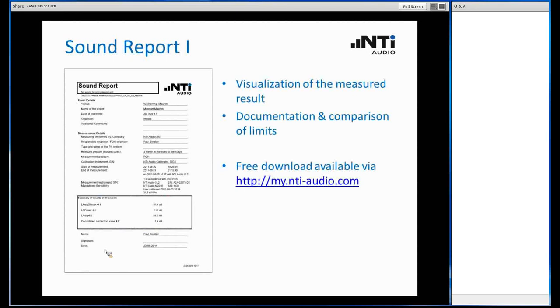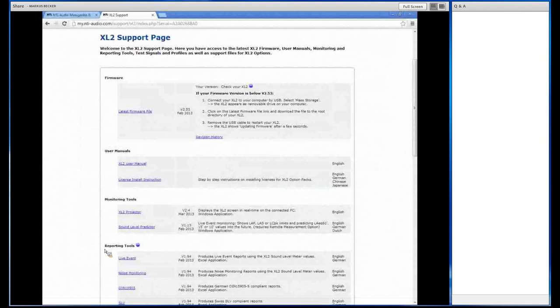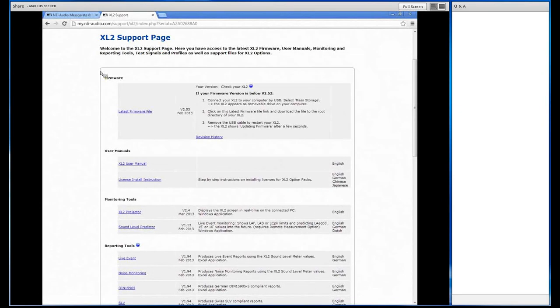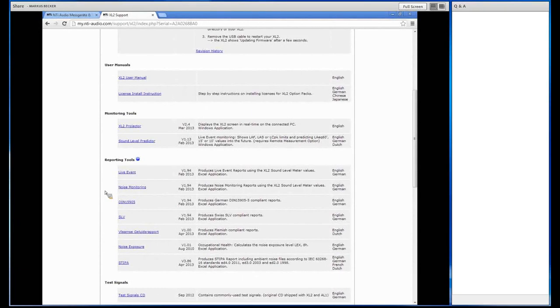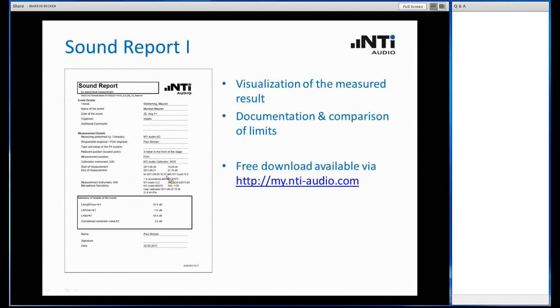Some words about the reporting. NTI offers a template for this sound report. I just show you how you can get it. Here we have the my NTI audio website. By registering at NTI audio you get access to this website, and here in the XL2 support page you see we have the reporting tools. By clicking on these links you will receive the corresponding Microsoft Excel sheet, which is already prepared to create exactly this kind of report. Creating means it acquires the logged data from the XL2, includes it into the report the key measures, what was the maximum level and so on. You can add your own name or the name of the event and print it out as a reference.